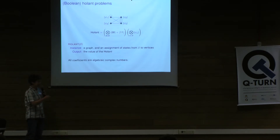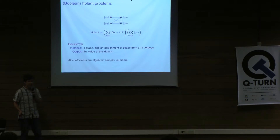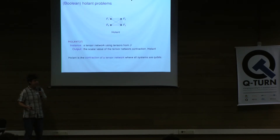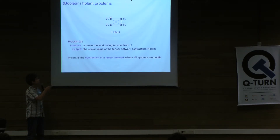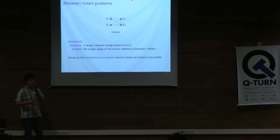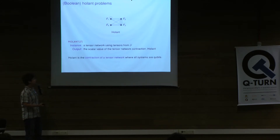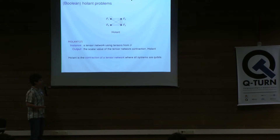For those familiar with tensor networks, there is an alternative way of looking at this. Rather than thinking about quantum states, we think about tensors. We still have a graph, but now to each vertex we assign a tensor and each edge gives a contraction of indices. Each index corresponds to one of the edges incident on the vertex, and each edge gives a contraction. Because there are no open edges left, we're fully contracting the tensor network, so the outcome is a scalar — a complex number. Throughout this talk I'll use the language of quantum states and projections, but if you work in tensor networks, please feel free to think in terms of tensors.